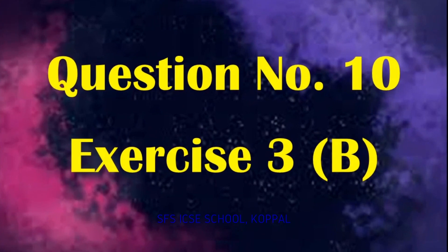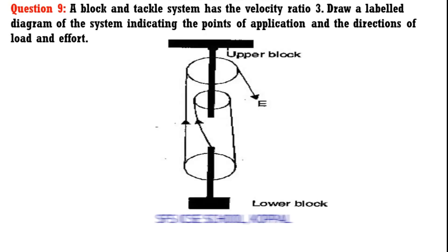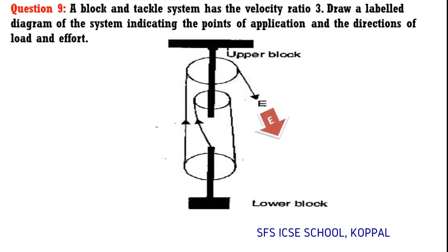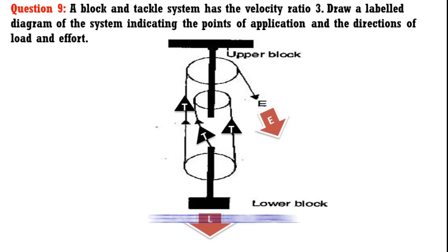Now let us do Question 10 of Exercise 3b. A block and tackle system has velocity ratio 3. Draw a labeled diagram indicating the points of application and direction of load and effort. Since velocity ratio equals 3, the total number of pulleys is 3 — two pulleys in the upper block and one pulley in the lower block. Effort is applied in the downward direction, load is placed at the lower block, with three tensions supporting the load and one tension supporting the effort.